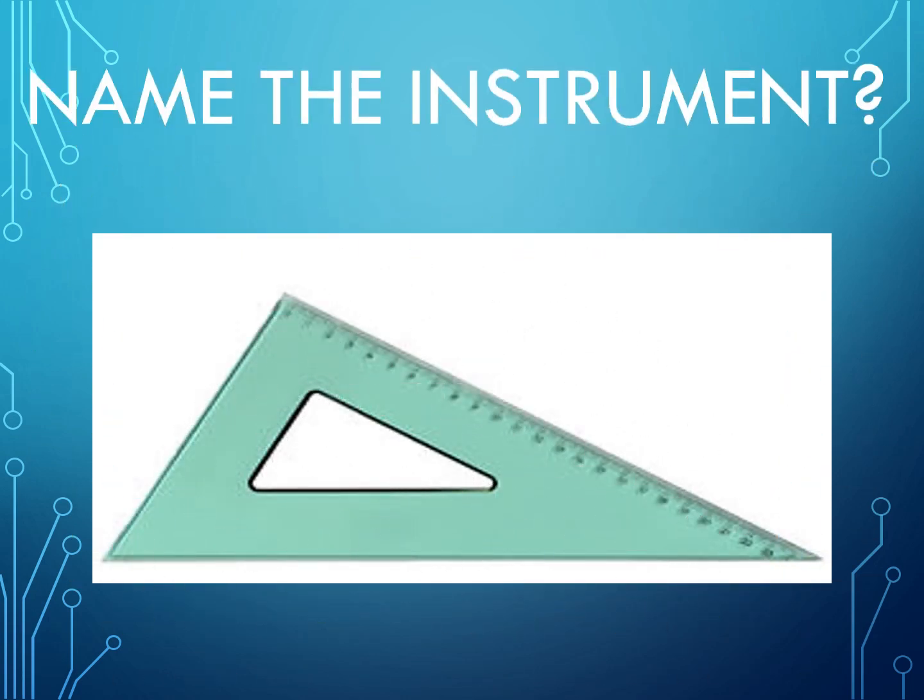Name the instrument. I hope everyone knows this easy question. So now, time for answer: set square. Normally this is used for drawing right angles and perpendicular bisectors. Now go to the next question.